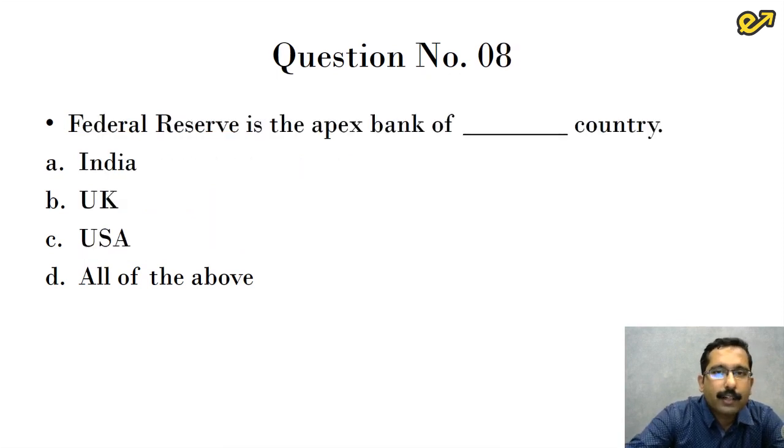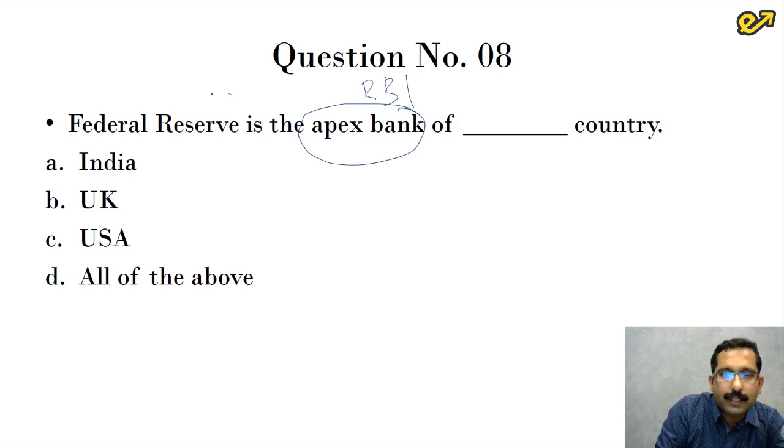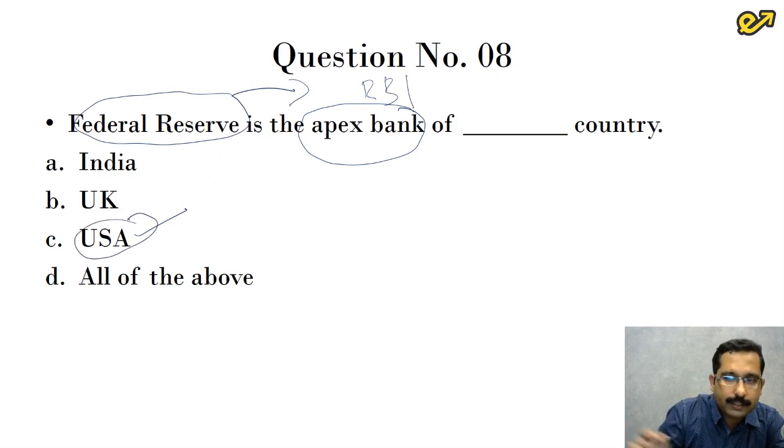Question number eight, federal reserve is the apex bank of dash country. Like all of us know, every country across the world will have an apex bank, it is autonomous in nature. If you take India as an example, our apex bank is RBI. So the question here is federal reserve is the apex bank of which country. So the answer for this is USA. It is again option C.